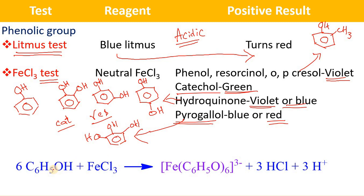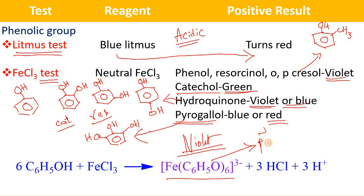When you treat phenol with ferric chloride solution, 6 moles of phenol will react with 1 mole of ferric chloride, and there is a formation of a pink-violet color coordination complex. Here the phenoxide anion is acting as a ligand. In this complex, the oxidation state of iron is +3. This is about the ferric chloride test.